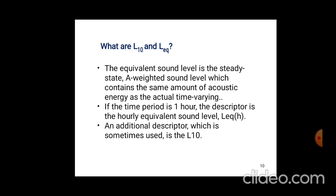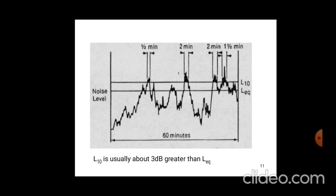What are L0 and L equivalent? The equivalent sound level is the steady-state, weighted sound level which contains the same amount of acoustic energy as the actual time-varying level. If the time period is 1 hour, the descriptor is the 1-hour equivalent. L equivalent is quite different — you can say it is the average. If that is 1 hour, that is L equivalent 1 hour. In addition to this descriptor, if the time is 10 hours, that is L10. This is the basic difference. A typical sound level or noise level graph is shown here for 60 minutes, with peak spots at 1.5 minutes, 2 minutes, 2 minutes, and 1.5 minutes. L10 is usually about 10 decibels greater than L equivalent.